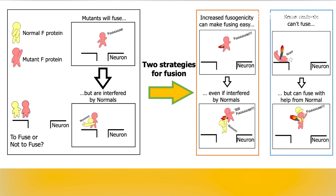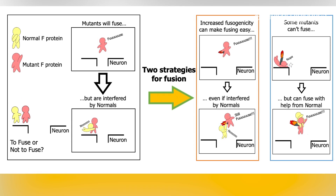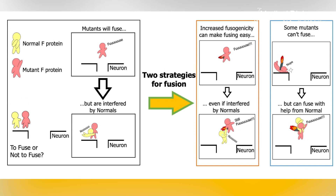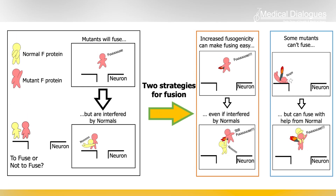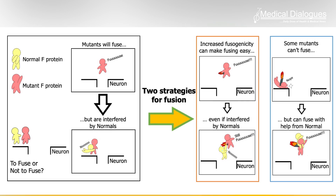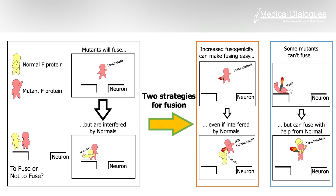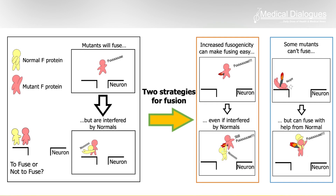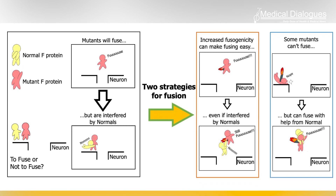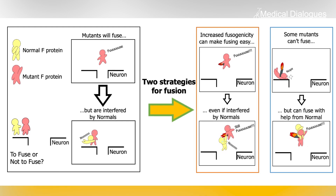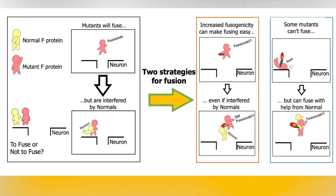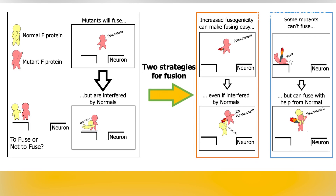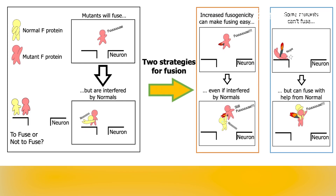In their latest study, the team analyzed the genome of the measles virus from SSPE patients and found that various mutations had accumulated in their F-protein. Interestingly, certain mutations would increase infection activity while others actually decreased it.